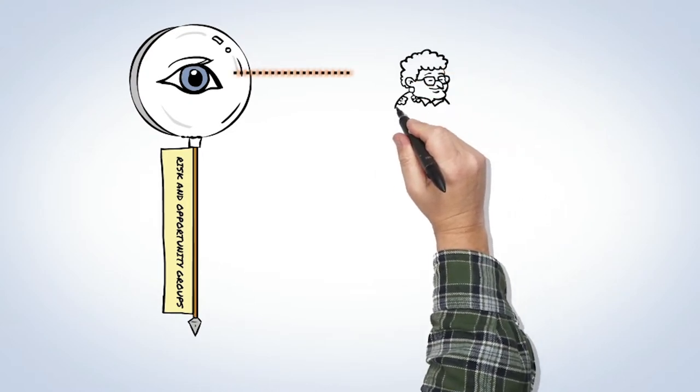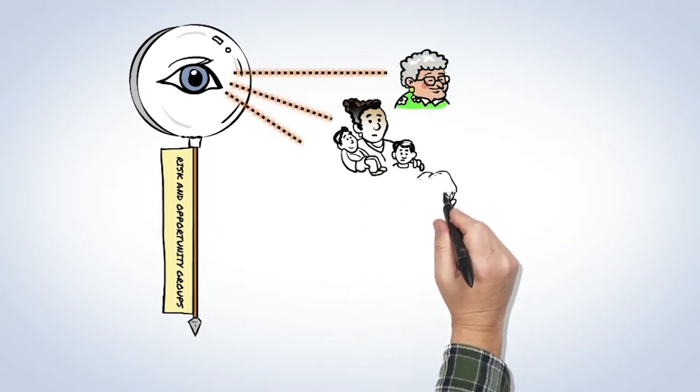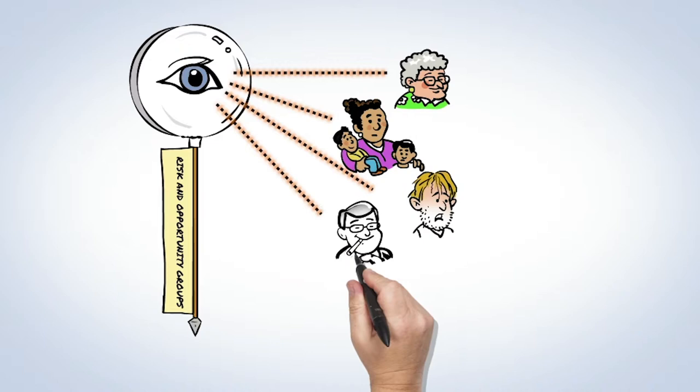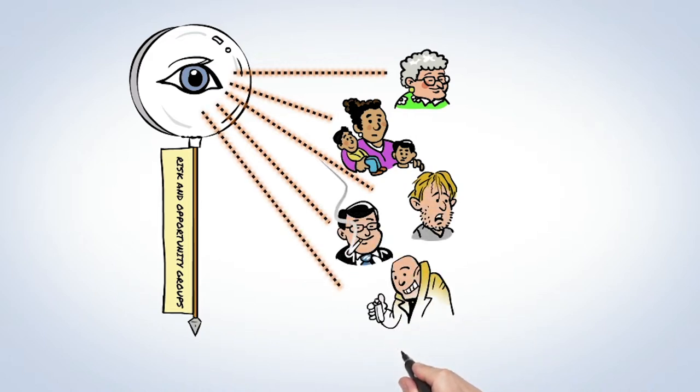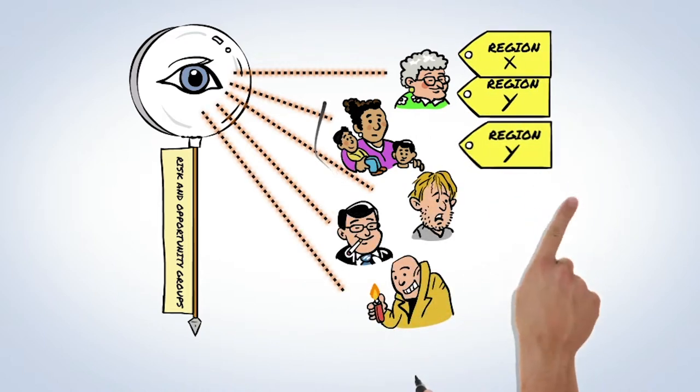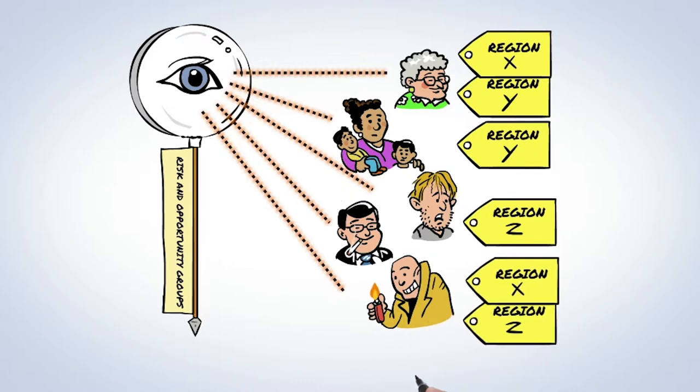By determining various risk and opportunity groups, we can determine our direction and concentrate our knowledge, expertise and resources on the issues that really matter. The decision to make a risk group a target group can vary by region.